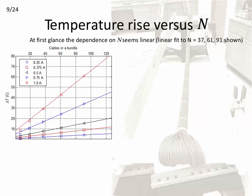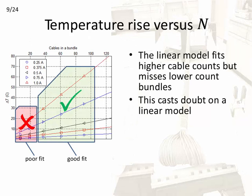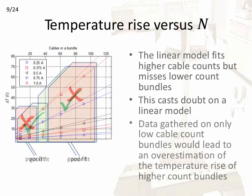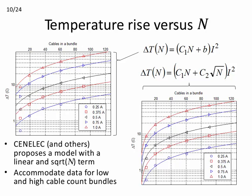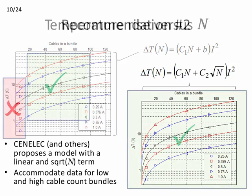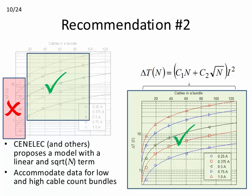We can also consider the temperature rise versus the number of cables in the bundle. At first glance, we might be tempted to use a straight-line fit to estimate the relationship between temperature rise and the number of cables. The closer inspection reveals that the linear model is a good fit to high-cable count bundles, but misses the data when the number of cables in a bundle are small. If one were to gather temperature rise on bundles constructed using only a few cables, extrapolation using the linear model would overestimate the temperature rise of high-cable count bundles. The linear model breakdown is more clear when we plot the same data on a log-linear plot. It shows that a better fit is realized using a linear and square root of n-term function to describe the relationship between the temperature rise and the number of cables in a bundle. This is a widely accepted relationship used by CENELEC and TIA and accommodates the temperature rise for high and low cable count bundles.